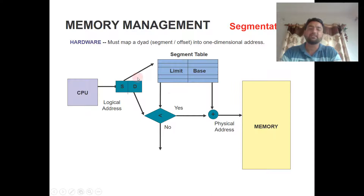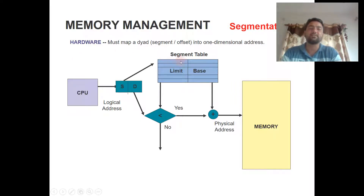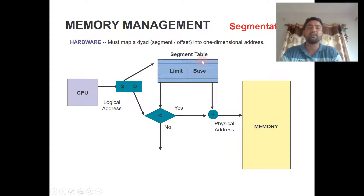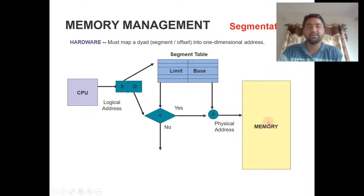The segment number is stored in the segment table as an index. After checking the limit, the segment number is used to identify the base address of the physical memory. That base address is then combined with the offset to generate the physical address in memory.